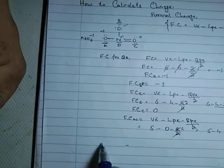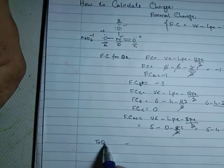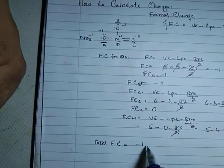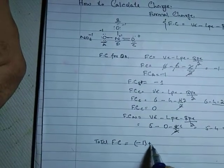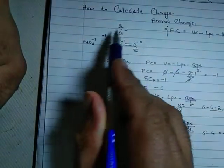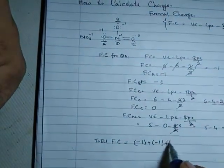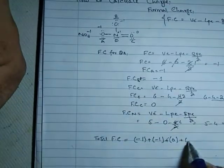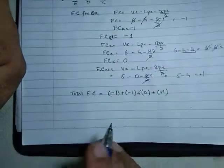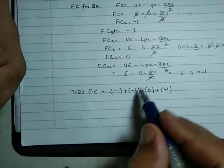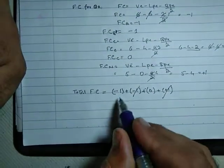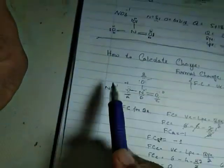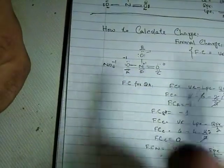The total formal charge: minus 1 plus minus 1 plus zero plus plus 1 equals minus 1, which matches the overall charge of the NO3 minus ion.